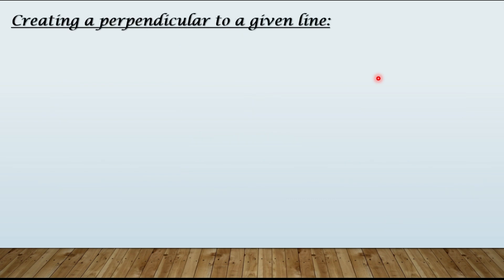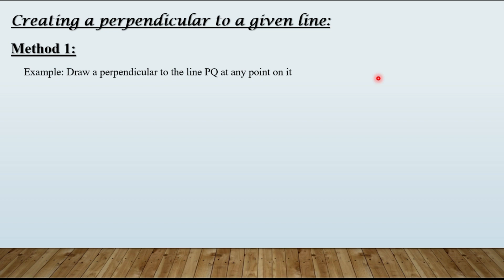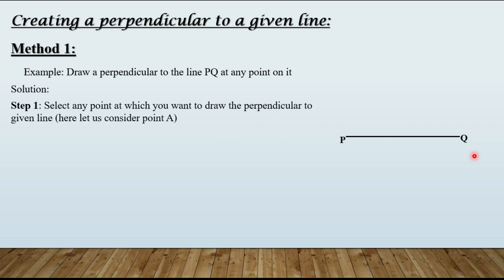First, creating a perpendicular to a given line. There are three methods and we'll see all of them one by one. I'm taking an example for better understanding. Let us say we have a question: draw a perpendicular to the line PQ at any point on it. So this is the line PQ given to us. Step number one: select any point at which you want to draw the perpendicular to the given line. Here let us consider point A.